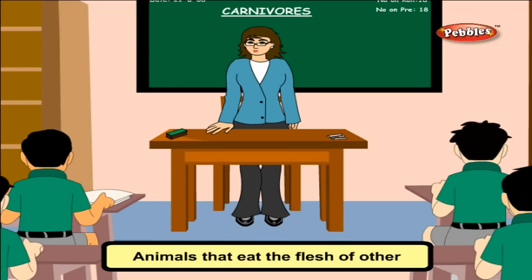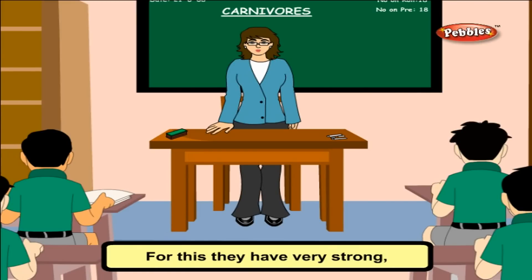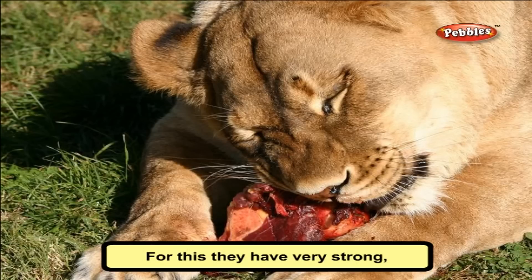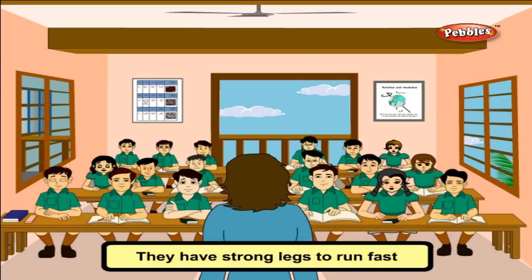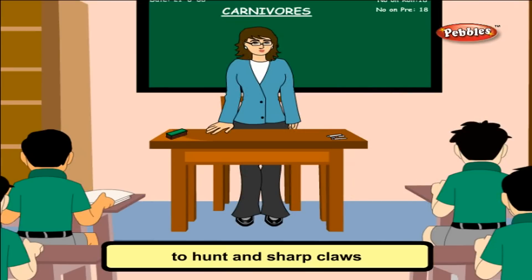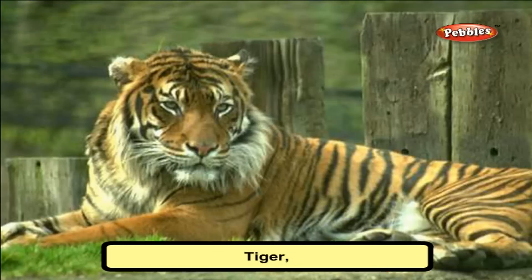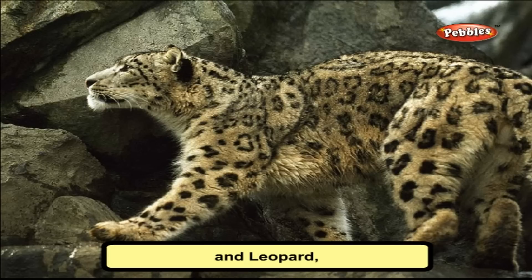Carnivores are animals that eat the flesh of other animals. They have very strong, sharp, and long teeth that help in tearing and cutting. They have strong legs to run fast to hunt and sharp claws to catch their prey. Examples are lion, tiger, and leopard.